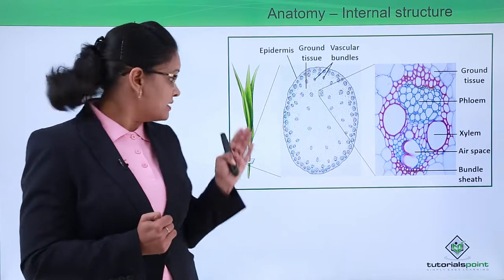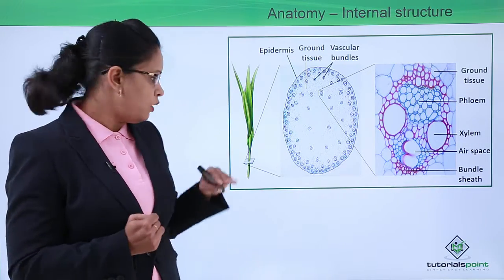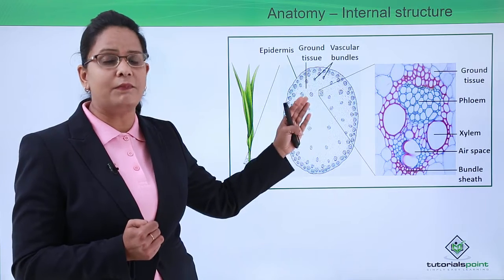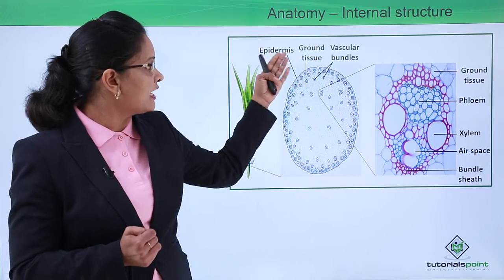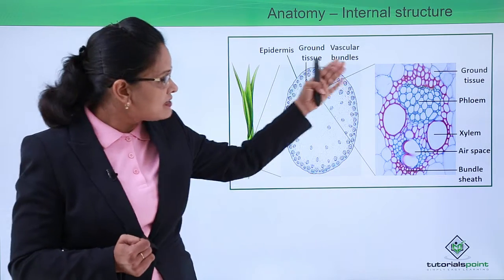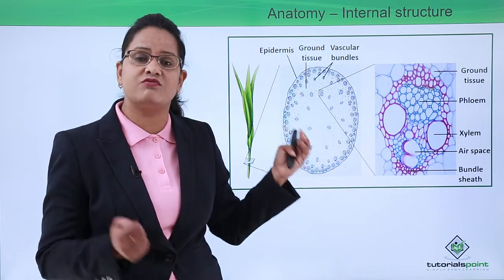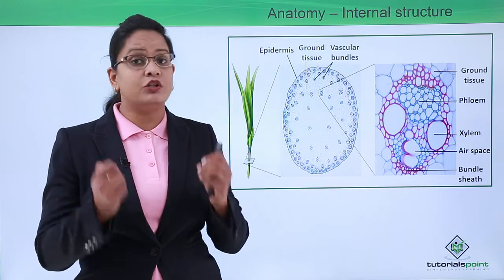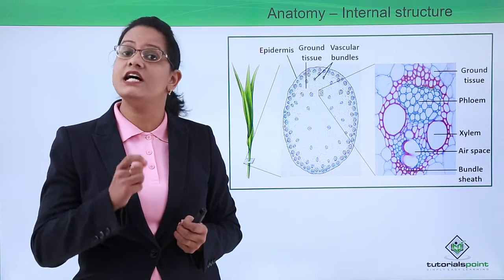As we can clearly see in the diagram, a simple-looking plant when cut and a section taken is so complicated. There are so many types of tissues like epidermis, ground tissue, and vascular tissue, and further there are so many types of cells that join together to form these tissues.